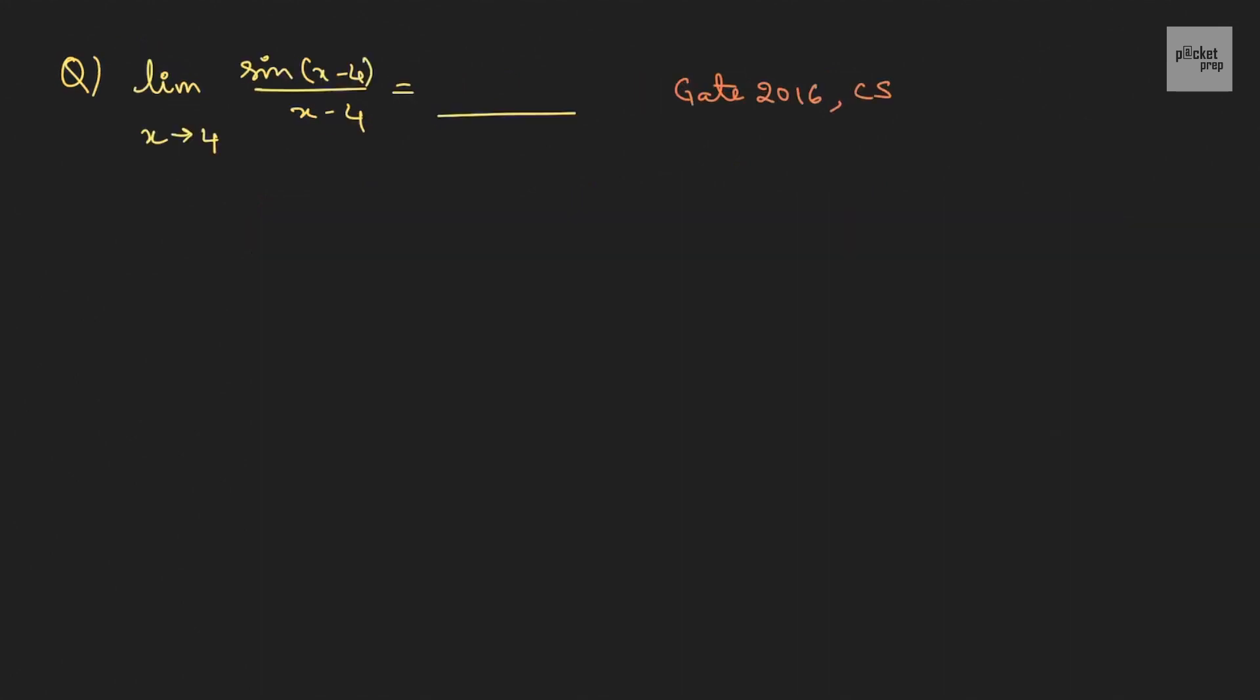Let us do one more. Here we have a question asked in gate 2016 computer science. Limit x tends to 4, sin x minus 4 by x minus 4. So, here we have limit x tends to 4, sin x minus 4 by x minus 4. Now, here you can see the function is not x rather they have given it as x minus 4. So, let us change this. So, I will assume x minus 4 as t.